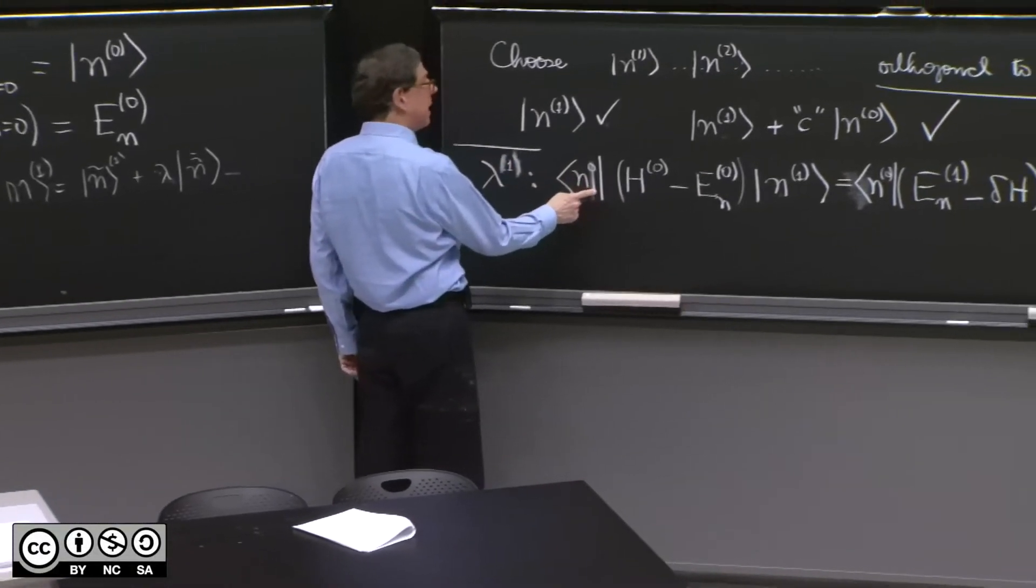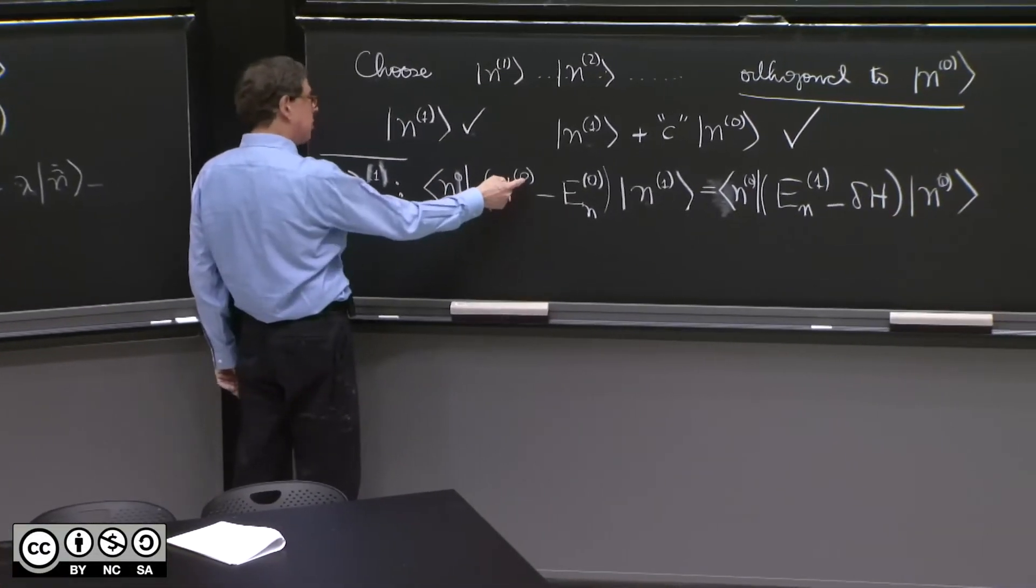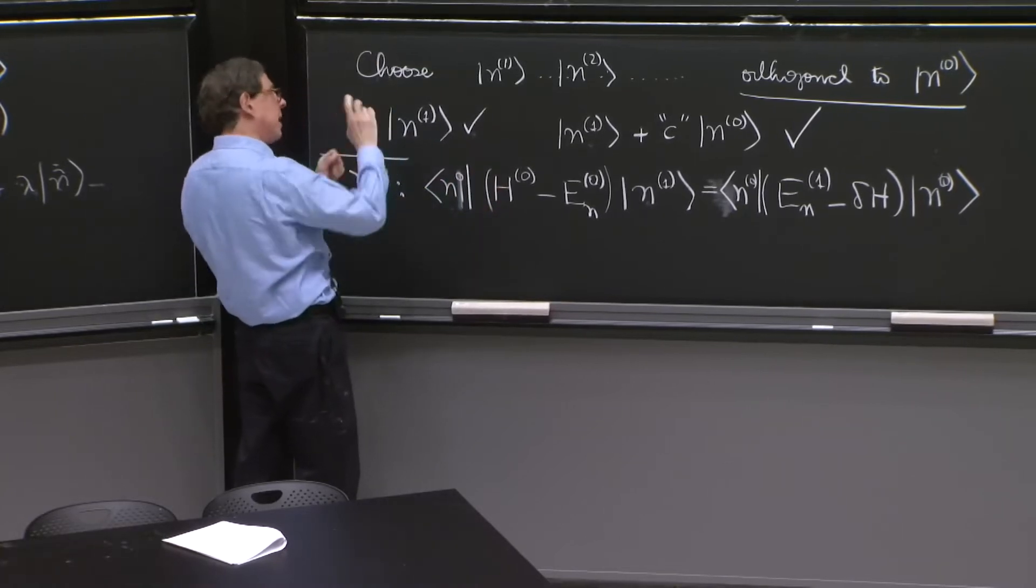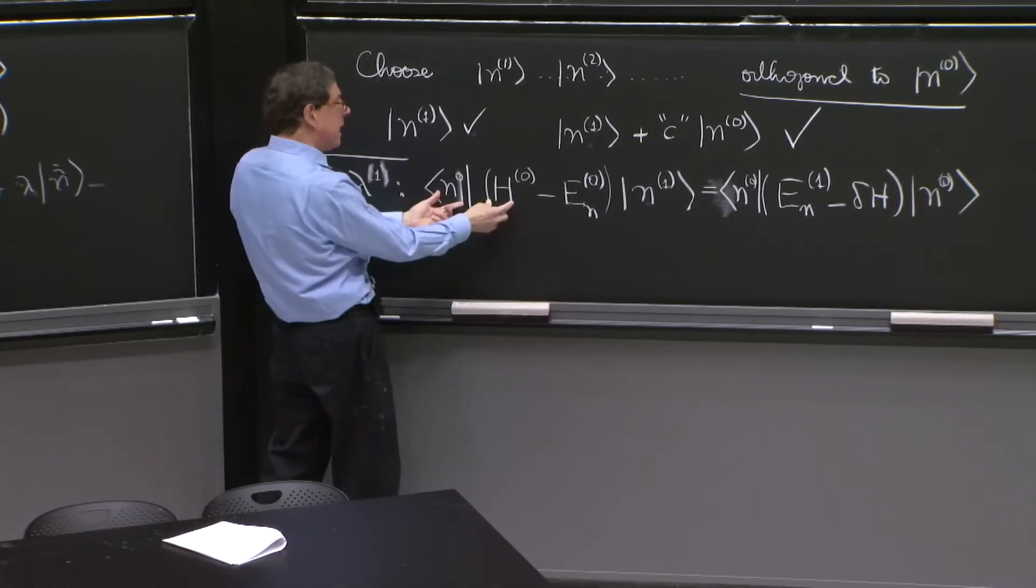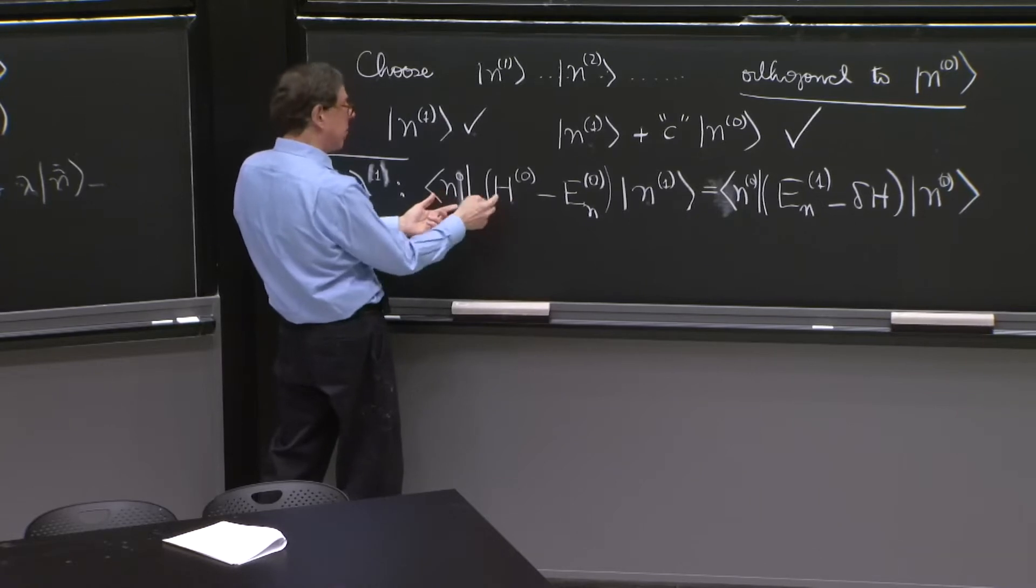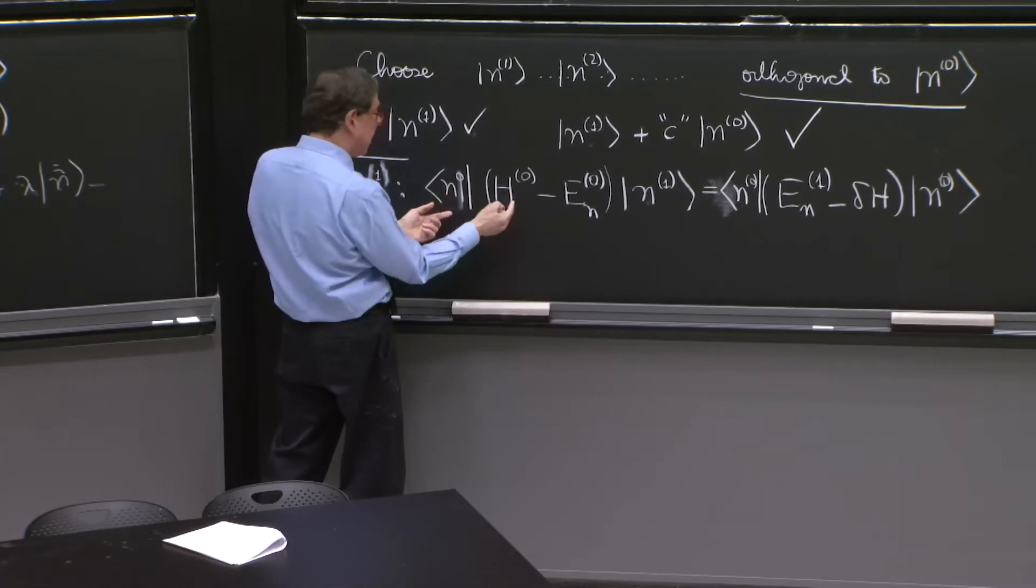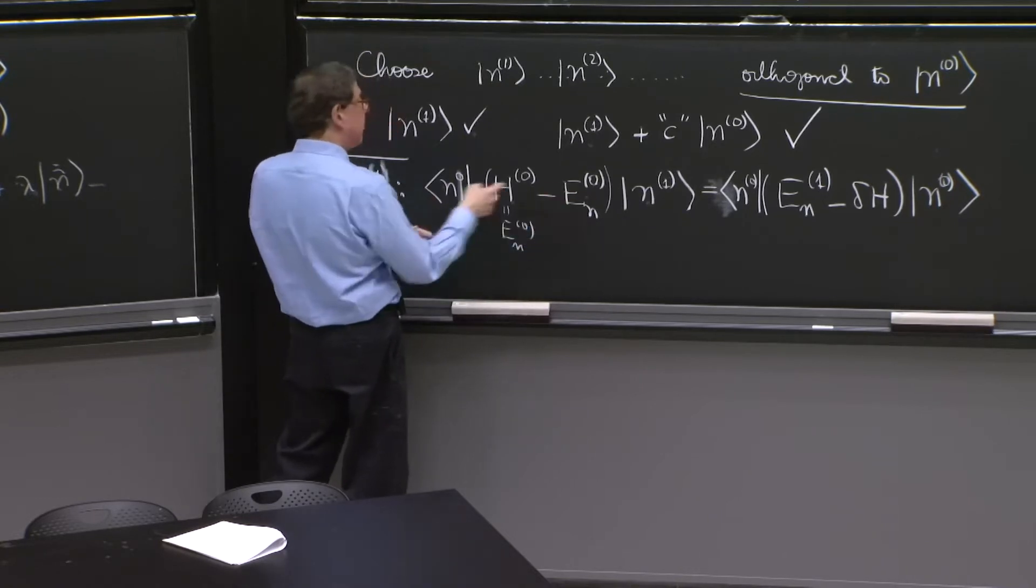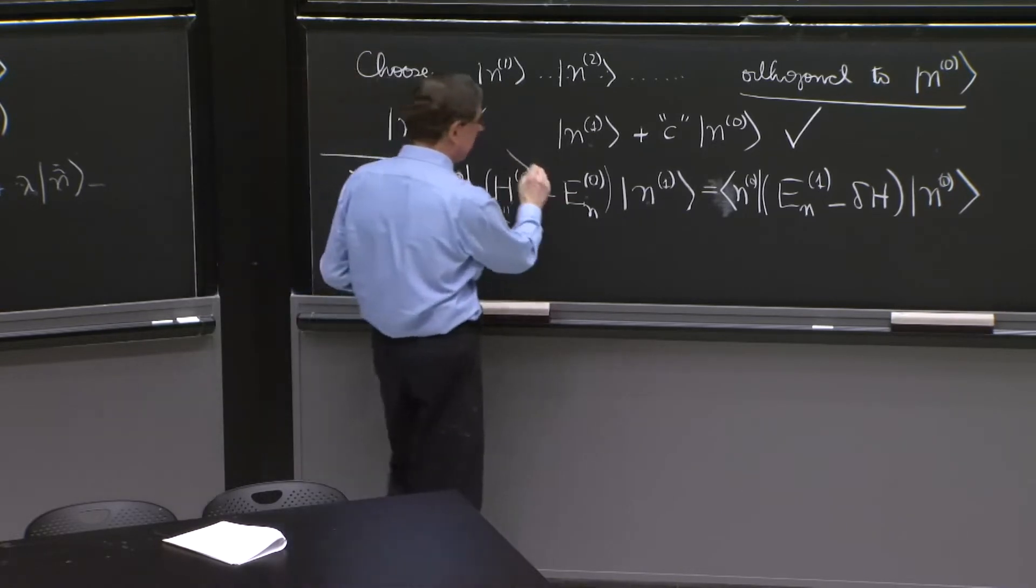The left-hand side here is 0, because h0 and n0, by taking the eigenstate equation, is equal to En0 times n0. So this really evaluates to En0. And therefore, the two cancel. So this thing is 0.